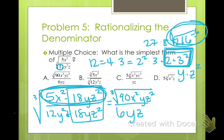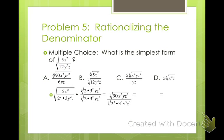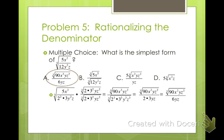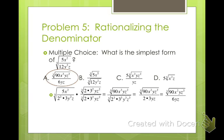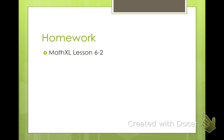Which answer choice matches? That would be letter A. Rationalizing the denominator means making all the numbers, factors, and variables in the denominator have the power equal to your root index, by multiplying by whatever makes those perfect roots. Your homework is 5-2. Hope you have a great day.